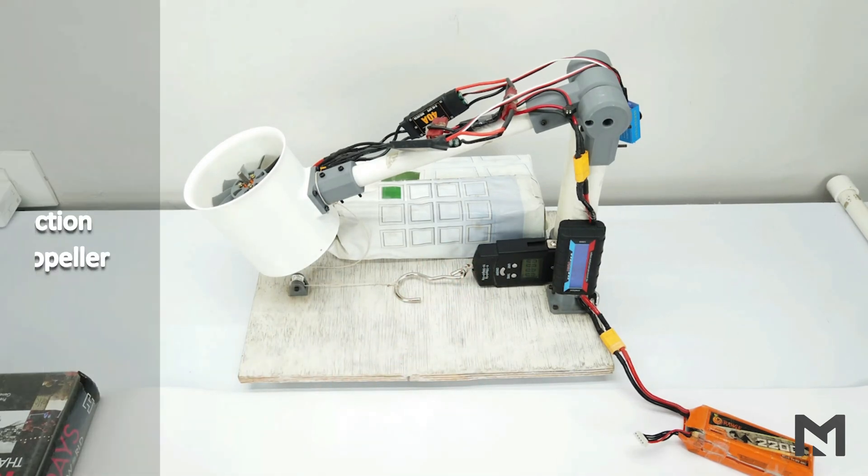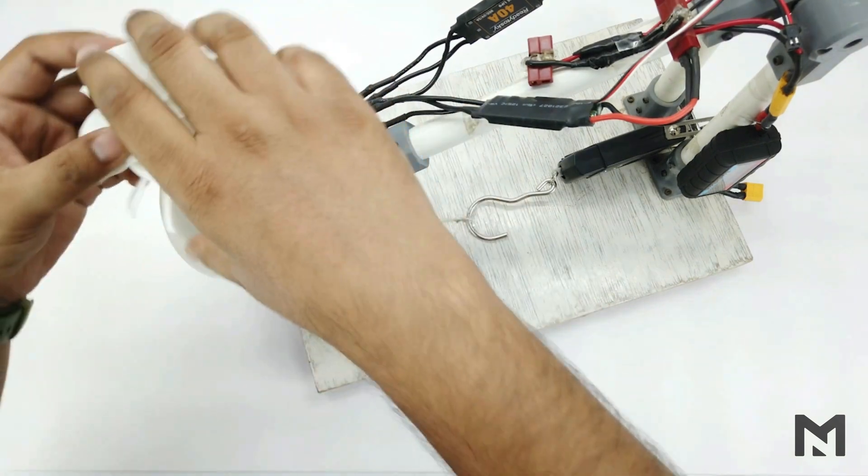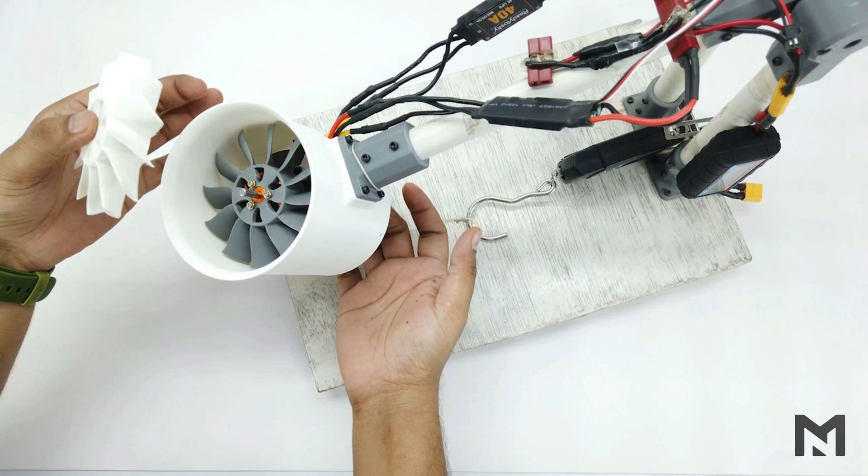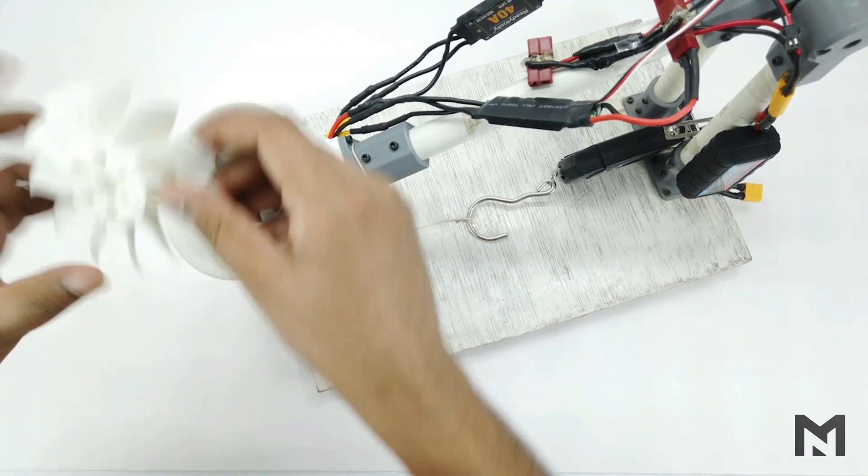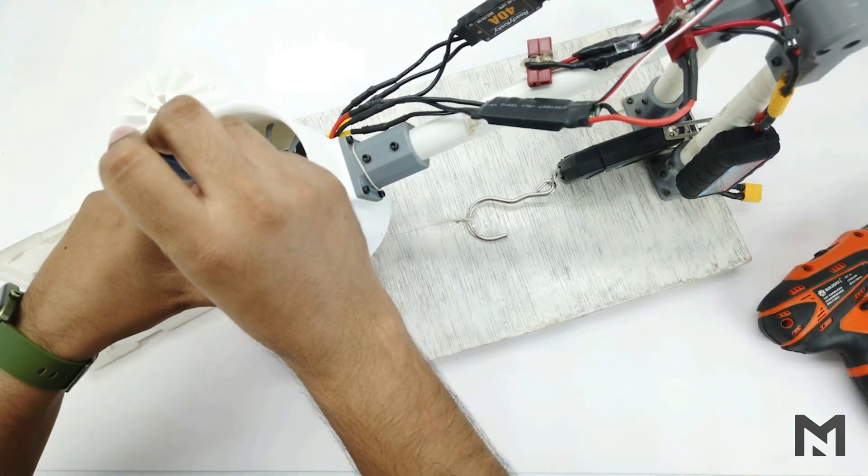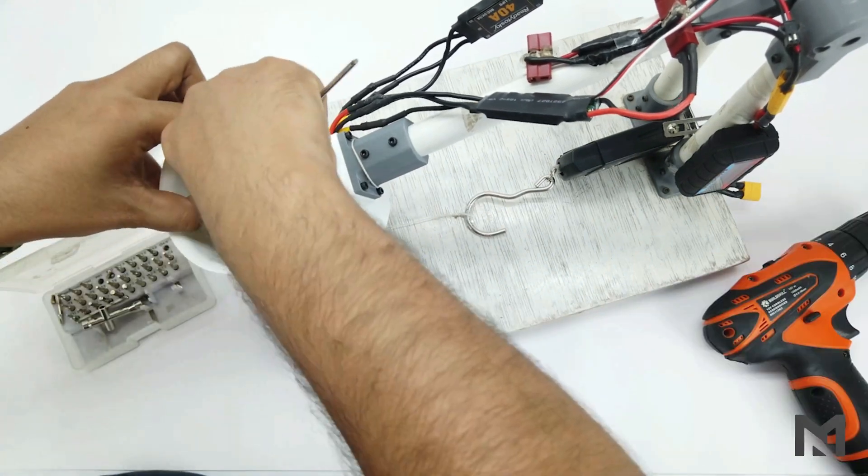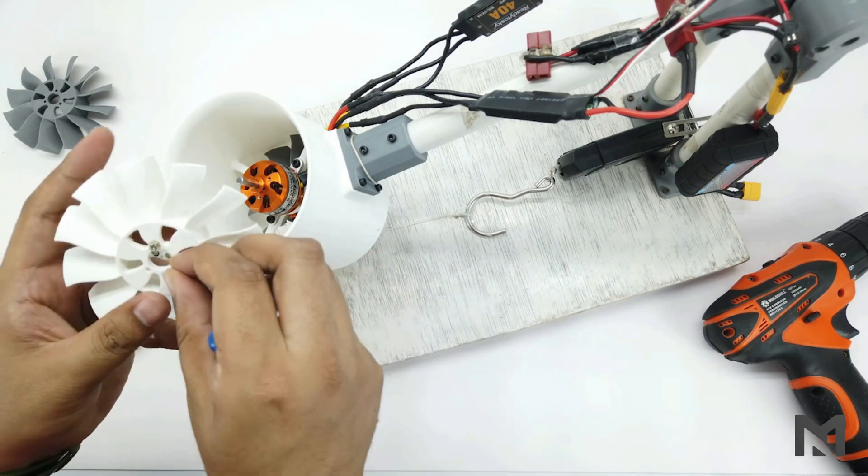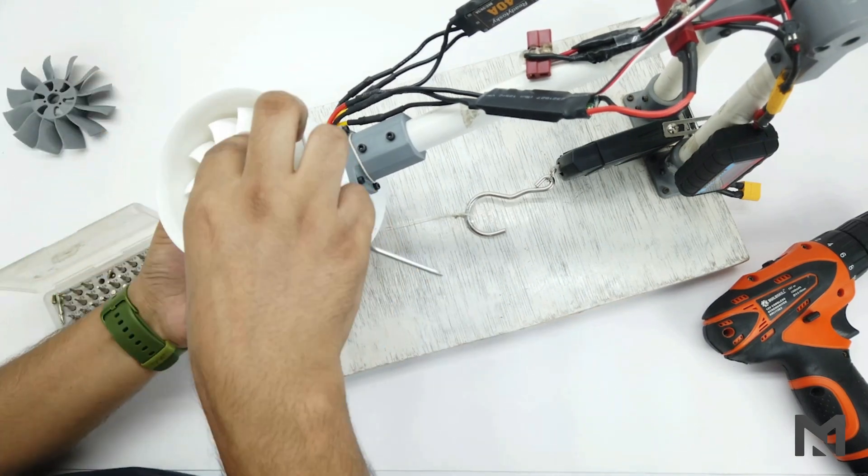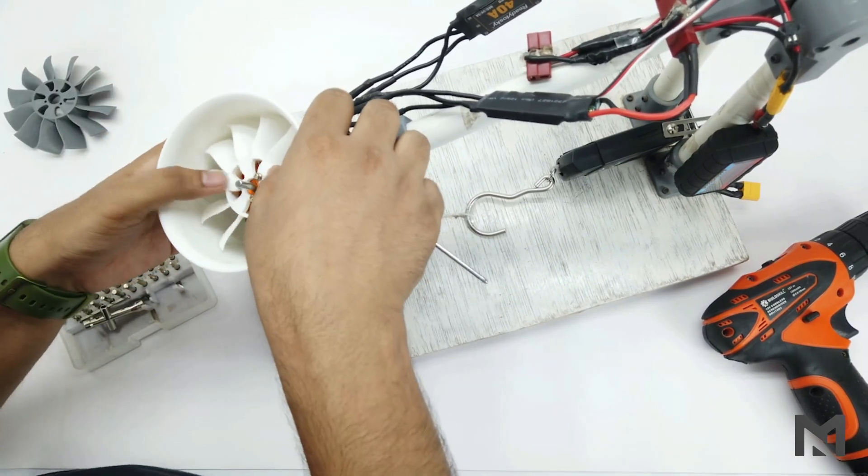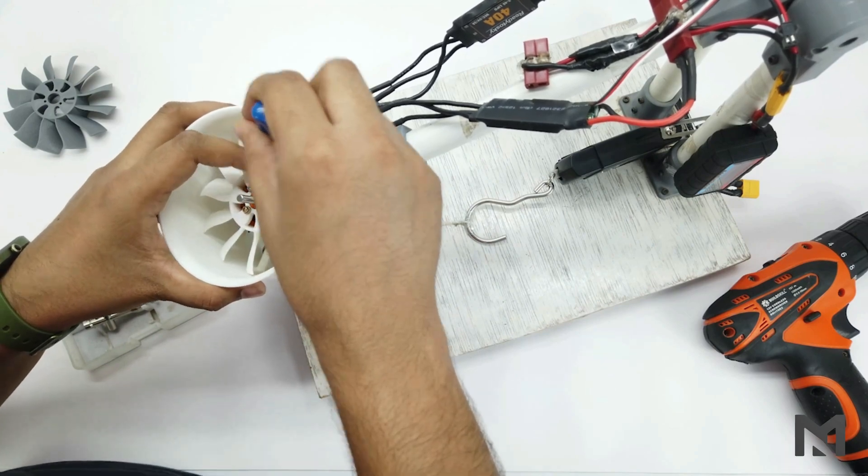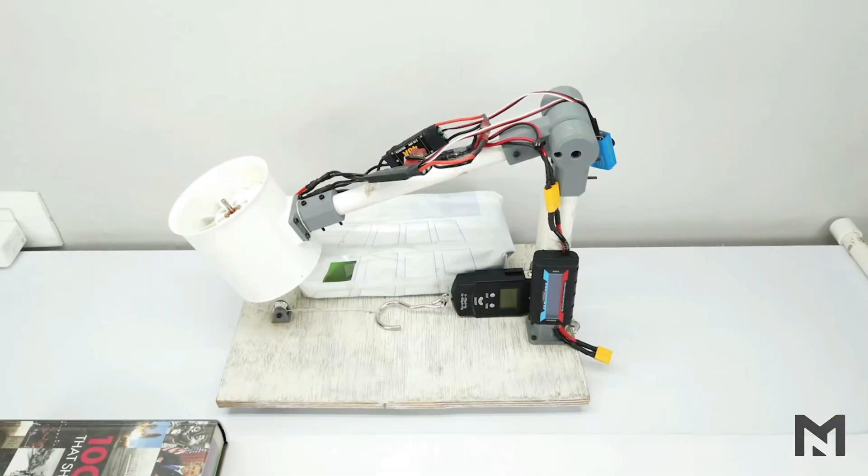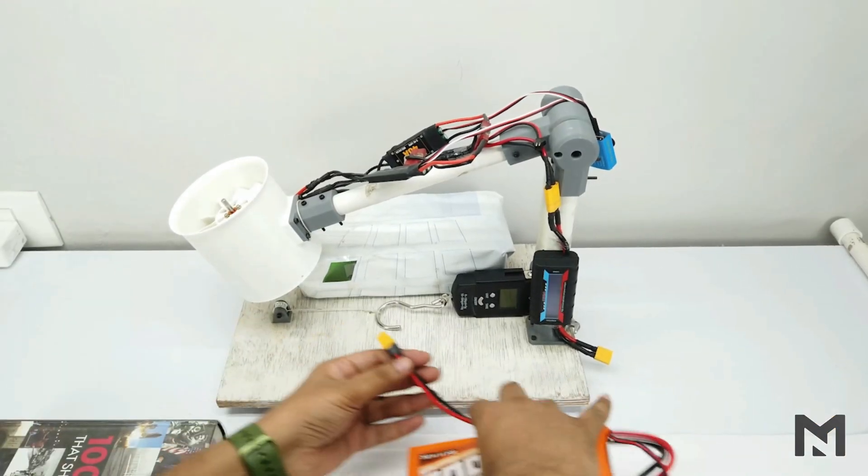Now I will put this propeller on the front for our second configuration. Now I have attached the propeller and now I will begin the thrust test. So first I will connect this 3S battery.